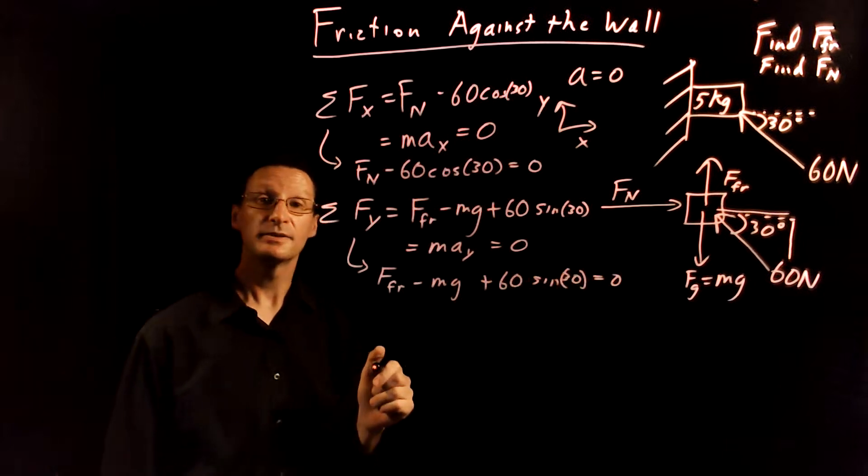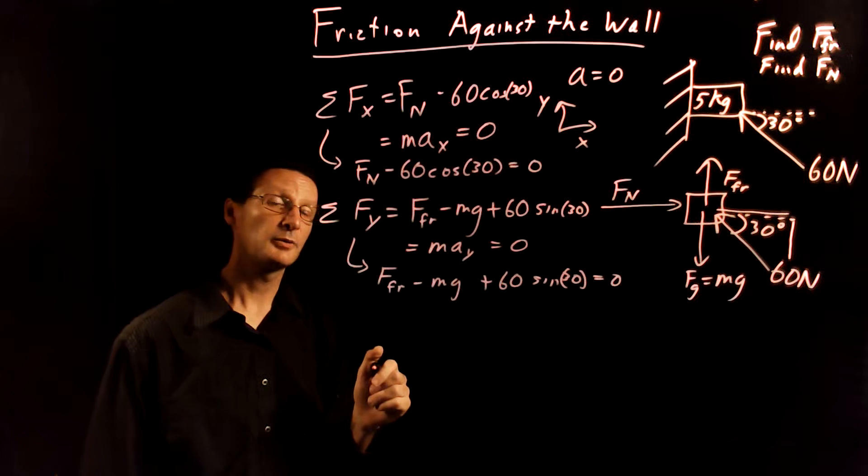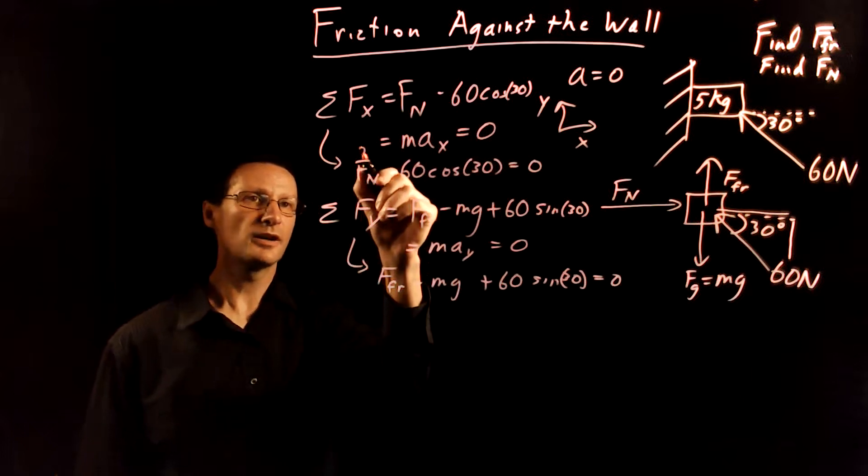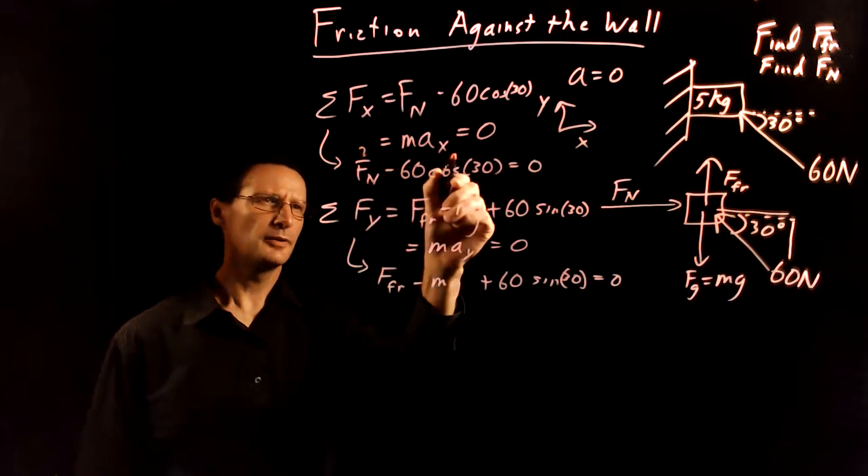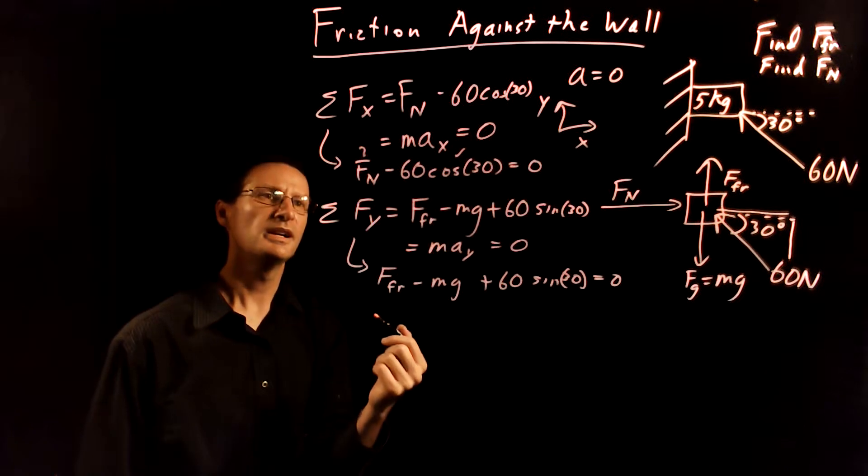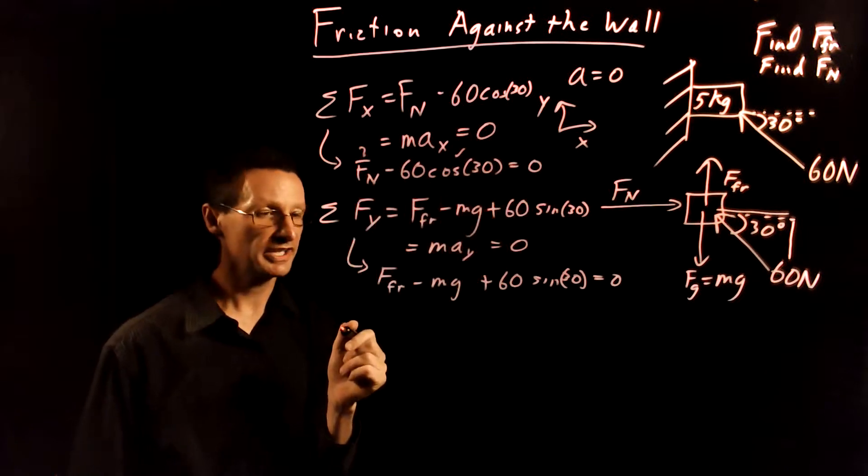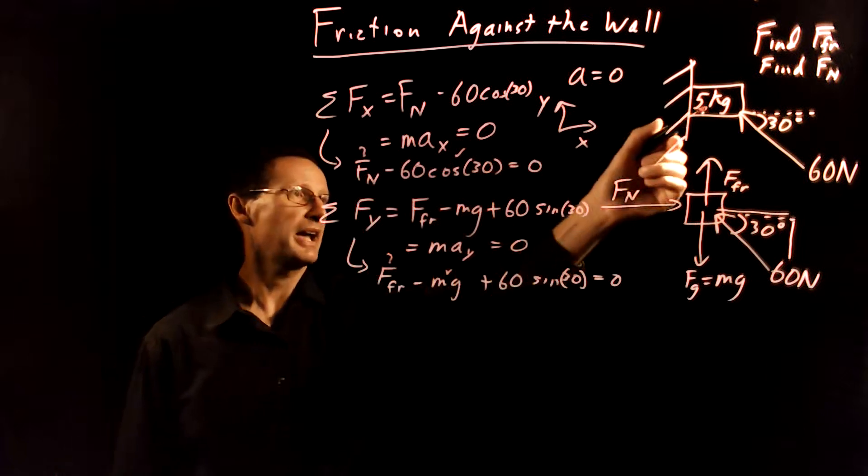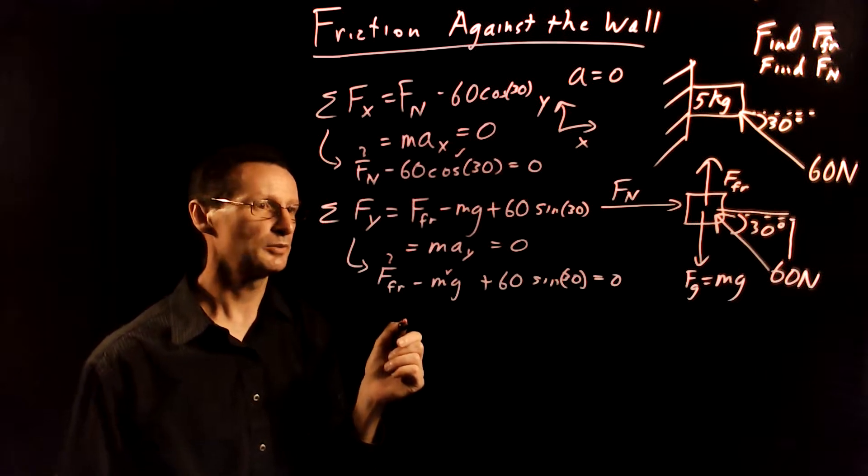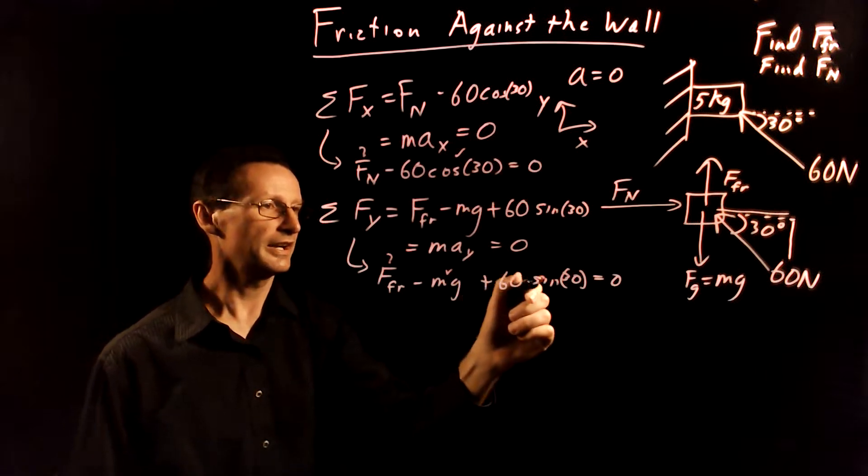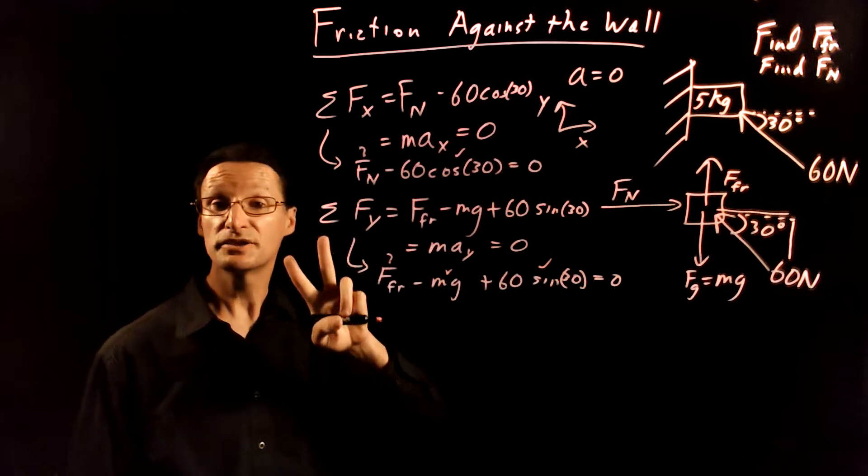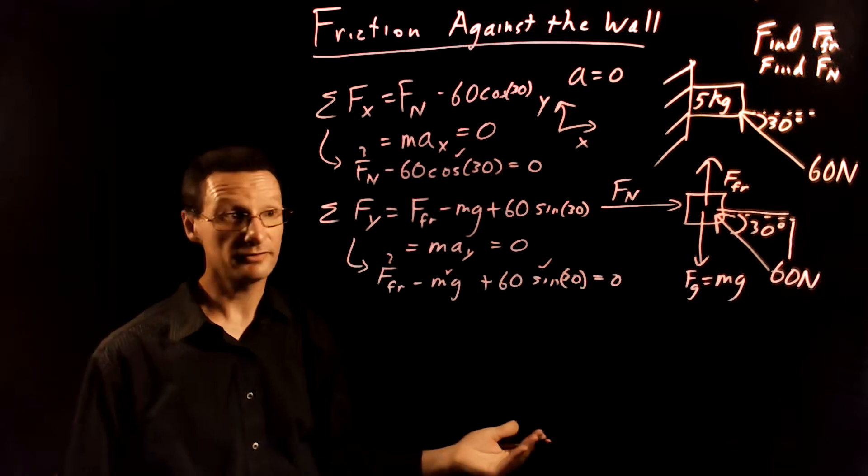Okay so now at this point I want to count my equations and unknowns. I have an equation here. I don't know Fn. I know this stuff. I know zero. So I have one equation and one unknown here. That's good. Here I don't know the frictional force. I know gravity because I know the mass is five kilograms so I know how much gravity is and I know all this stuff. So I have another equation and another unknown. So two equations and two unknowns. That's solvable.